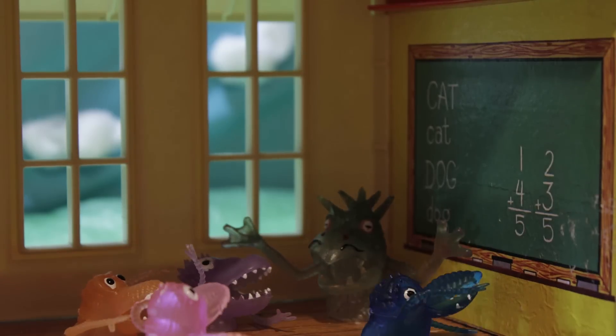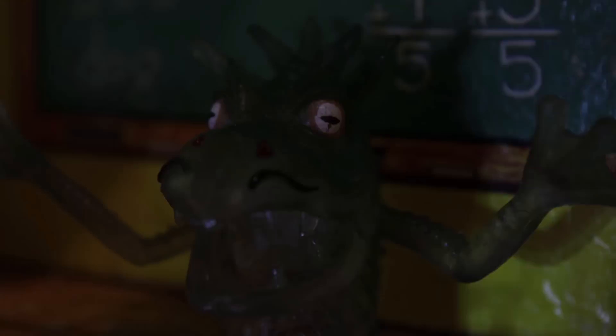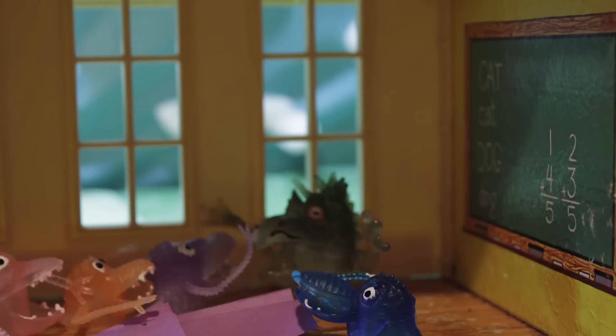But it says on the board one plus four and two plus three equals five. I am the boss. This is too difficult. Let's make our airplane now.